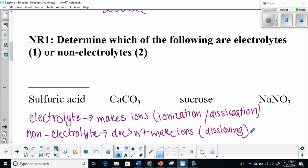For the purpose of this course, we're just going to say anything that undergoes dissolving will be a non-electrolyte. We've got our four compounds here. Sulfuric acid, that's an acid. It's going to undergo ionization, so of course it's going to be an electrolyte.